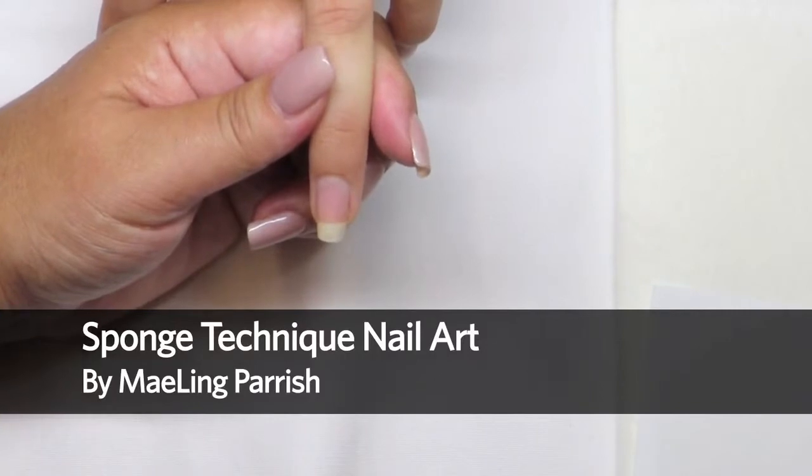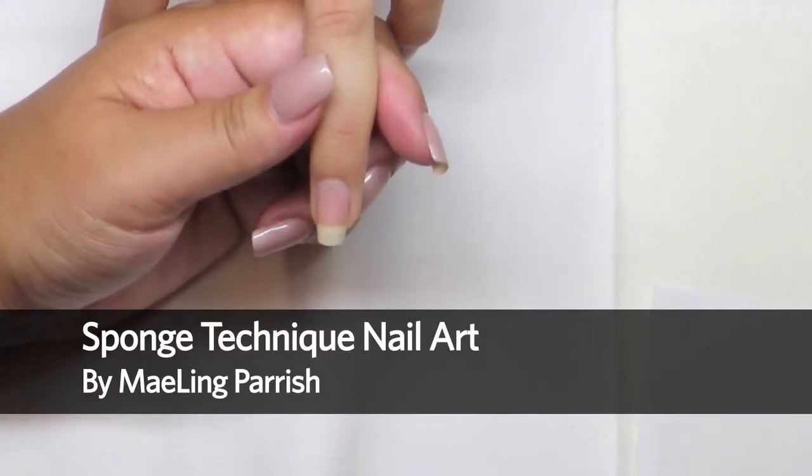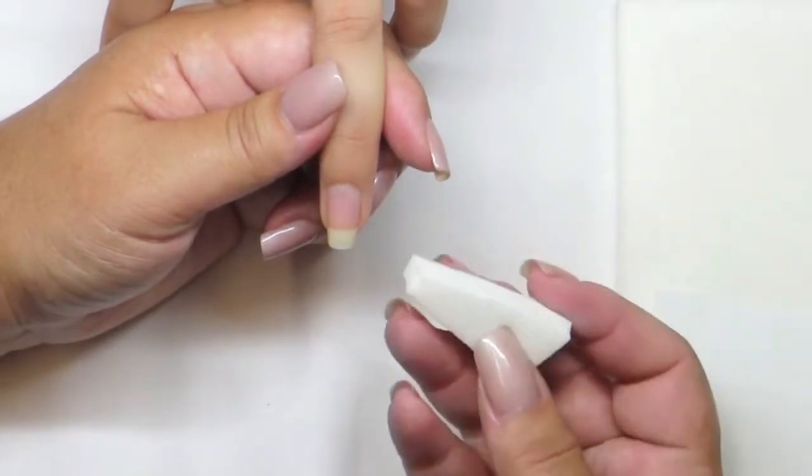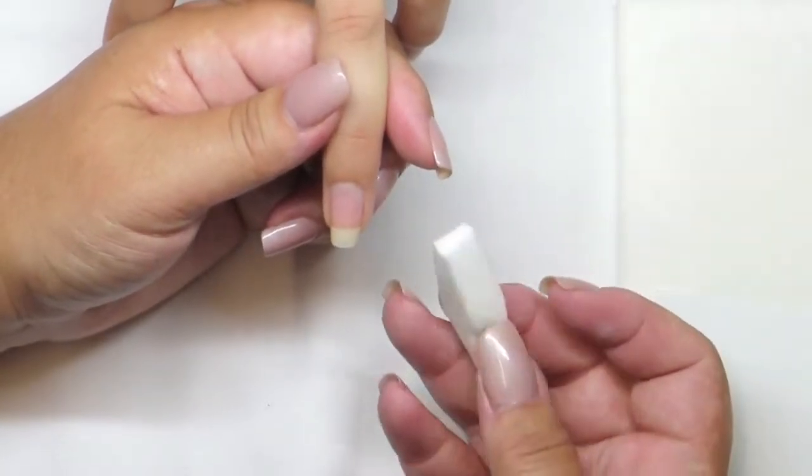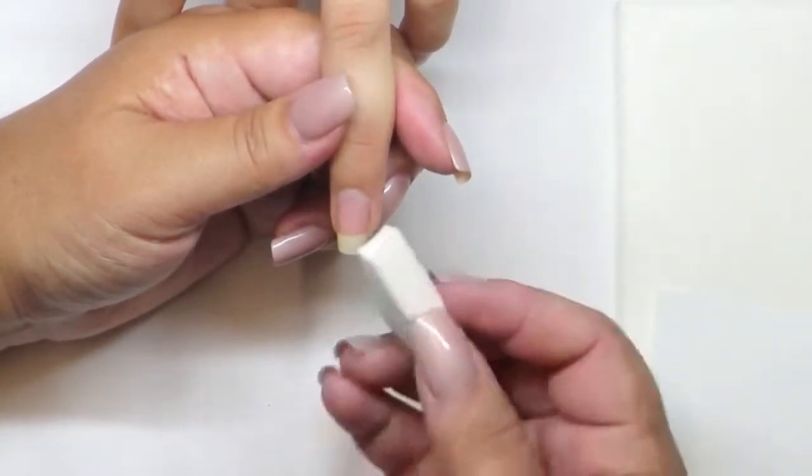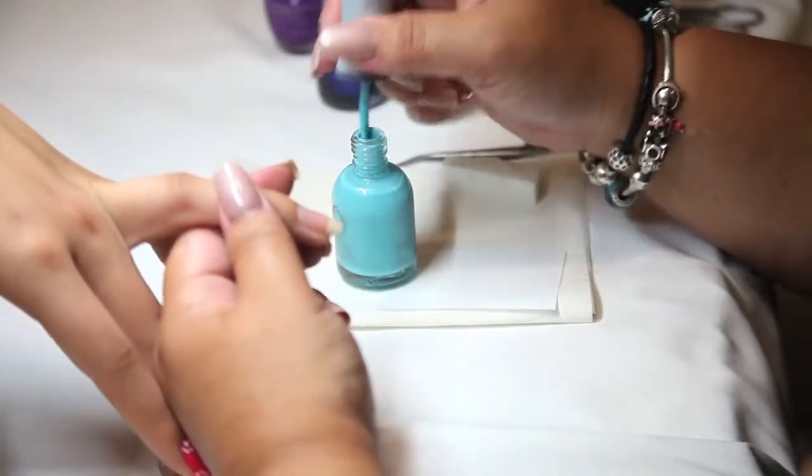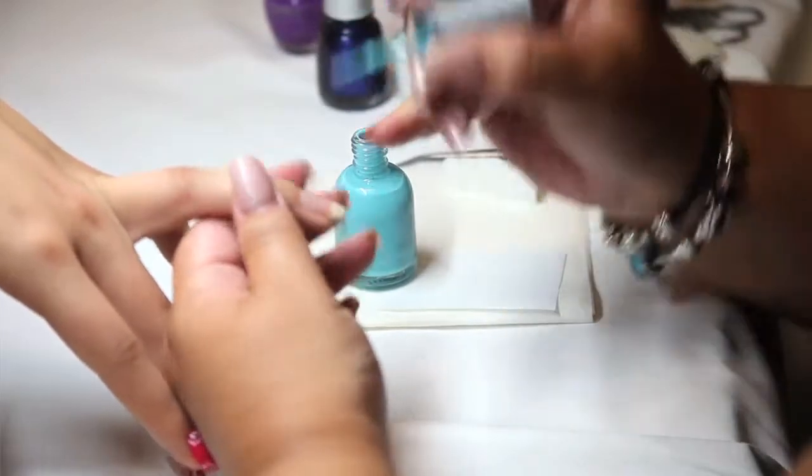Using polish, we're going to do a variation of a sponge technique. I'm using a regular traditional makeup sponge, and I've just cut it in half to make it a little bit thinner to fit this nail size. I'm going to apply this robin egg blue as her base color.